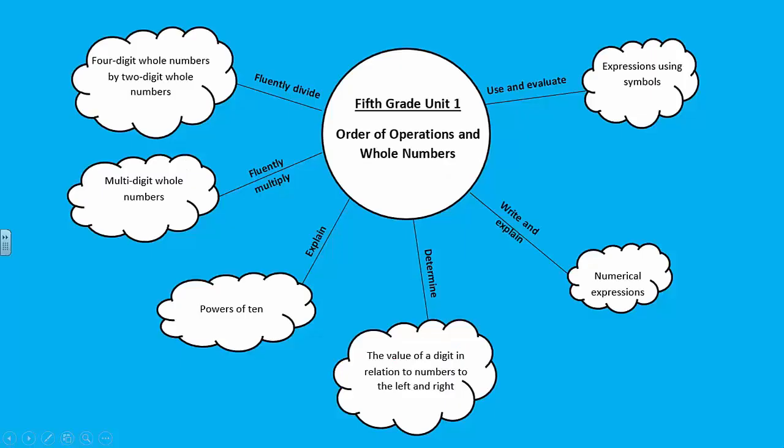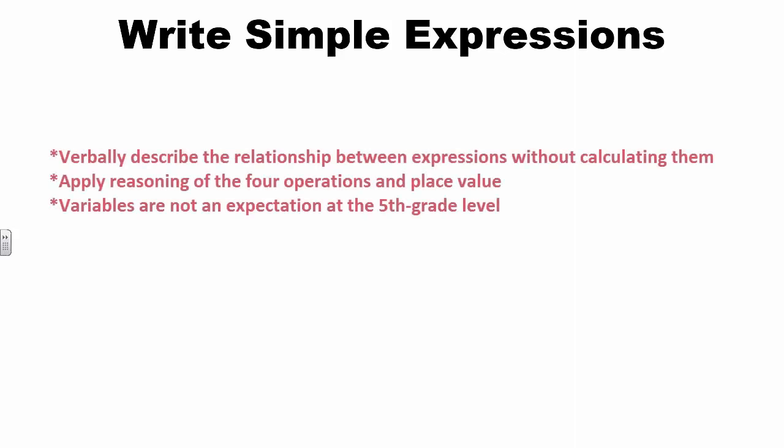In the next segment of the video, we'll look at Standard OA-2: Write and explain numerical expressions without evaluating them. This standard calls for students to verbally describe the relationship between expressions without actually calculating them. It calls for students to apply their reasoning of the four operations as well as place value while describing the relationship between numbers. This standard does not include the use of variables, only numbers and signs for operations.